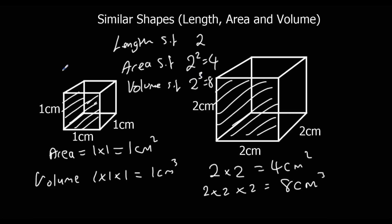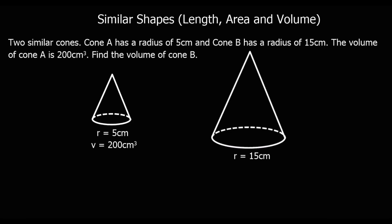So when you have your normal scale factor: if you want to find the area scale factor, you square it. If you want to find the volume scale factor, you cube your normal scale factor. That's how you work out these questions.